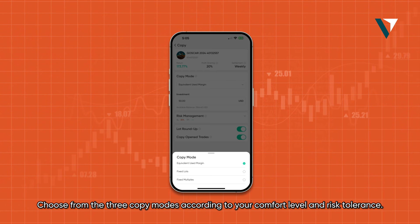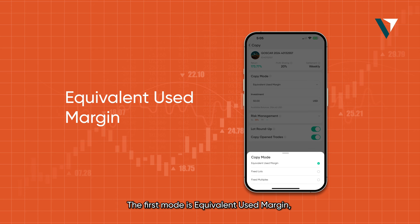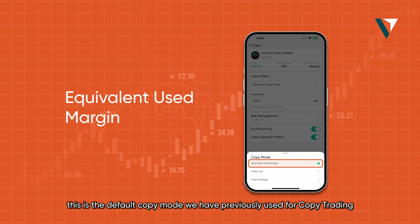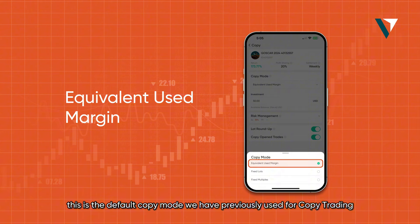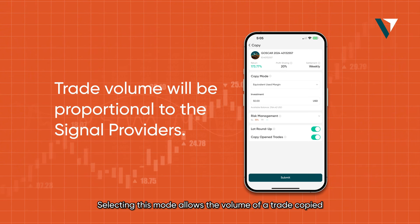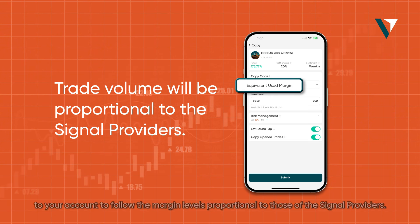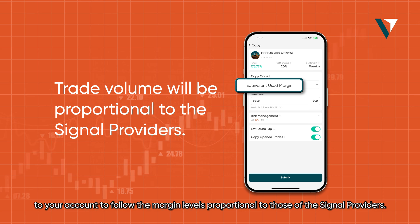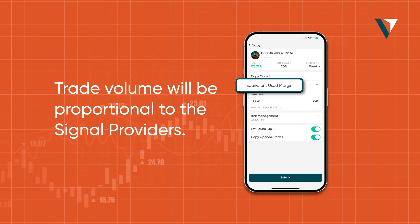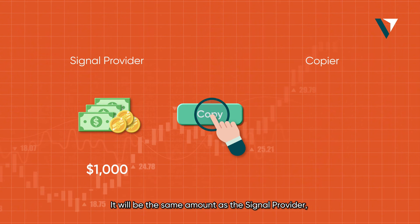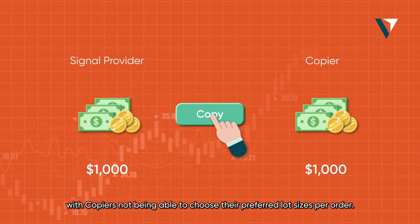Choose your mode according to your comfort level and risk tolerance. The first mode is Equivalent Used Margin — this is the default copy mode. Selecting this mode allows the volume of a trade copied to your account to follow the margin levels proportional to those of the signal provider, with copiers not being able to choose their preferred lot sizes per order.